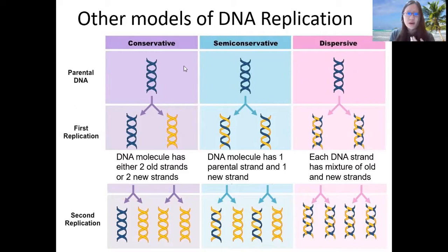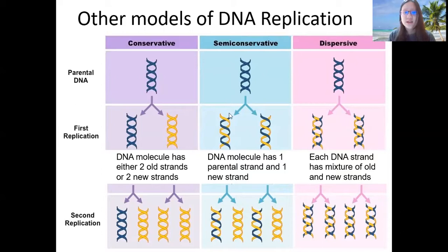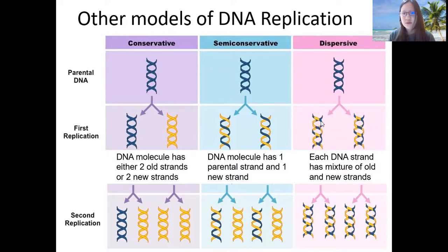So just a quick recap: the conservative model is that you have two old strands and two new strands after the first replication, and the molecule is composed completely of the same type of strands — completely two old strands and completely two new strands. Semi-conservative, which we know is true, is that the DNA molecule has one parental strand and one newly synthesized strand. Whereas in a dispersive model, each DNA strand has a mixture of old and new fragments — really a mix of everything.